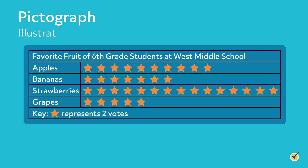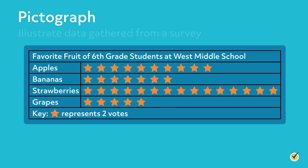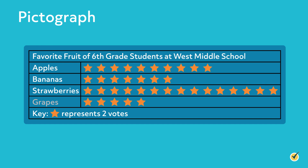Mathematicians use pictographs to illustrate data gathered from a survey. In this case, the survey asked about the fruit preferences of students. We can see that the most popular fruit in this survey is strawberries. The least popular fruit is grapes. Since there are seven stars next to bananas, and each star represents two votes, 14 students voted for bananas.